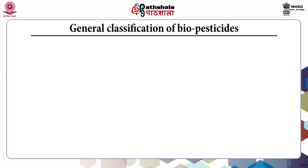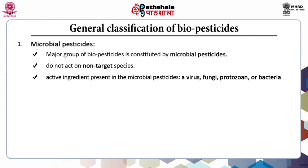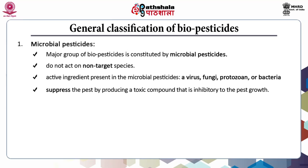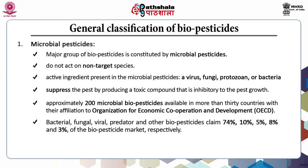Coming to the general classification of biopesticides, the first class is microbial pesticides. The major group of biopesticides is constituted by microbial pesticides. They do not act on non-target species and the active ingredient present in microbial pesticides can be a virus, fungi, protozoan, or bacteria. They suppress the pest by producing a toxic compound that is inhibitory to pest growth. Approximately 200 microbial biopesticides are available in more than 30 countries affiliated with the OECD. Bacterial, viral, fungal, predator, and other biopesticides claim 74%, 10%, 5%, 8%, and 3% of the biopesticide market respectively.